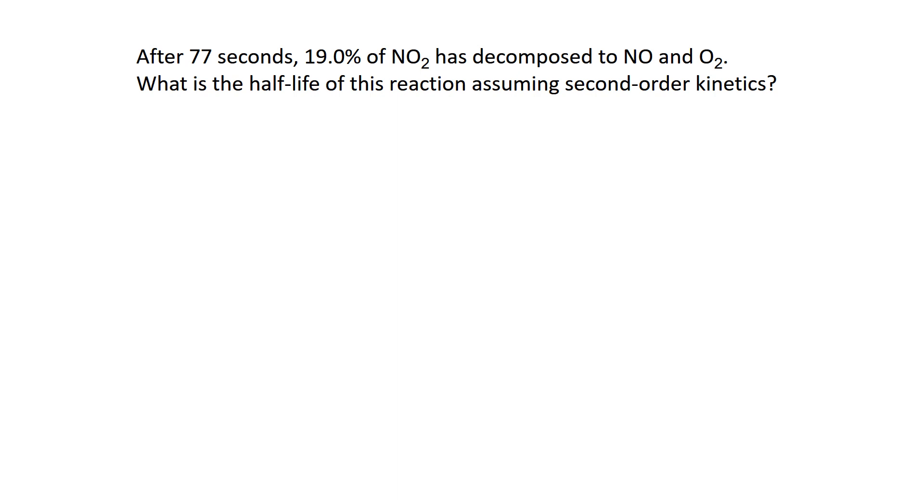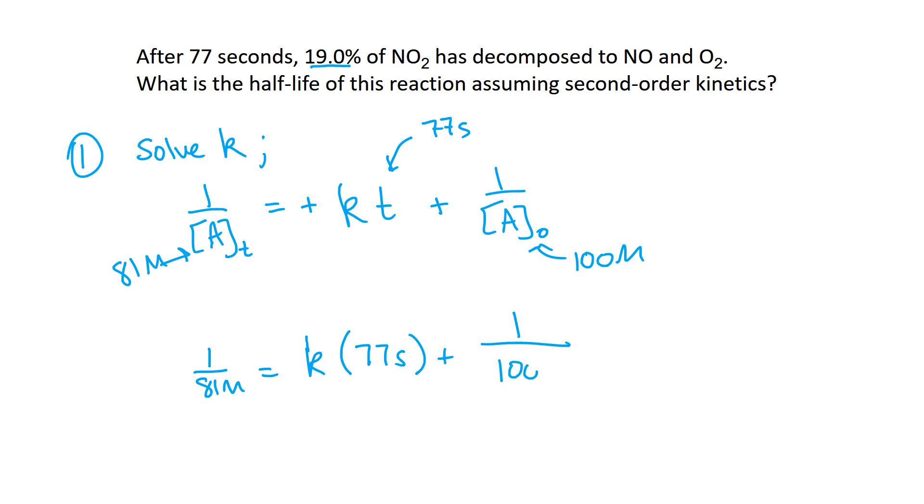So let's go ahead and do the math for this. So the first thing I'm going to do is I'm going to solve for K, that rate constant, using the integrated rate law. So I have 1 over the concentration of A at a specific time equals positive KT plus 1 over the concentration of A initial. So concentration at specific time, that's after 19% decomposes, so that's going to be 81 molar. This number is going to be our 100 molar. Like I said, we just made this up because we just know that 19% decompose, and then the amount of time it takes is 77 seconds. So we're going to put these numbers in this rate law.